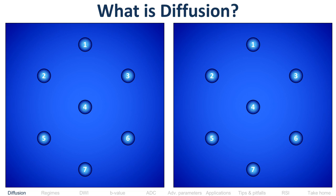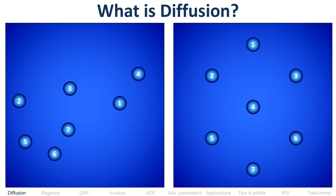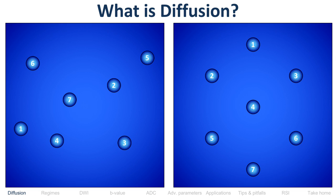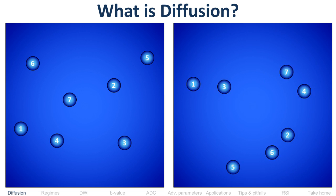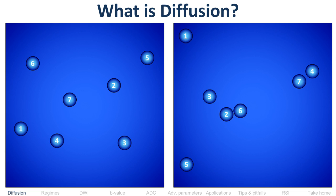Let's look at a thought experiment. We start with seven water molecules, named 1 through 7, and allow them to move. Notice they move randomly, so that after a couple of seconds they have a new configuration. The motion is random, meaning if I could go back in time and redo it, just by random chance the motions would be different and the water molecules would end up in different locations.